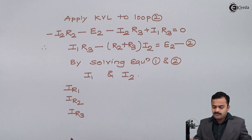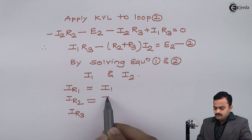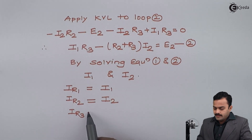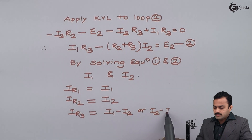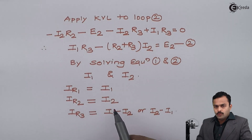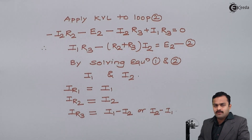So to summarize: current through R1 is I1, current through R2 is I2, and current through R3 is either I1 minus I2 or I2 minus I1, depending on which value is greater. We have seen how KVL can be used in a structured manner to develop the technique called mesh analysis, which is simpler than applying KVL and KCL directly. In further videos, we will see the application of mesh analysis for solving numerical problems. Thank you.